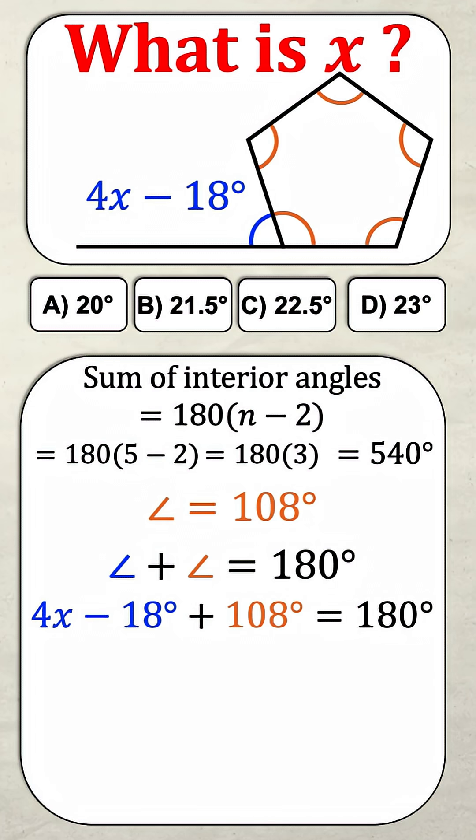Now I'm going to collect all my like terms, and that's going to give me 4x equals 180 degrees plus 18 degrees minus 108 degrees, which simplifies the right-hand side to 90, giving me 4x equals 90 degrees.